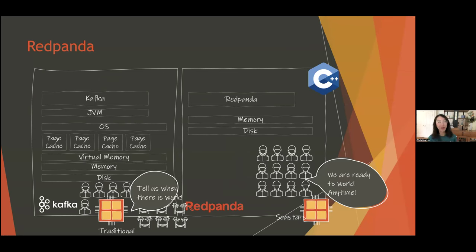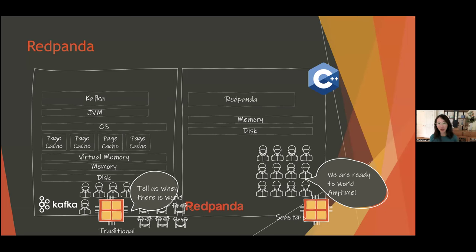A shameless plug — a little bit about Red Panda. Red Panda is a drop-in replacement for Kafka. You can just take Kafka out of your data stack and put Red Panda in — it will just work. The entire protocol and API is exactly the same. But what's the difference between Red Panda and Kafka? They're both streaming services. I like to geek out on the fundamental difference between the two pieces of technology.